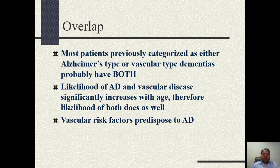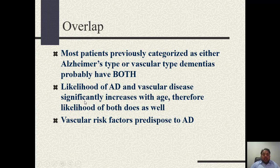Overlap syndrome is when Alzheimer's disease and vascular dementia coexist. Most cases previously labeled as either Alzheimer's disease or vascular dementia probably have both. The likelihood of both Alzheimer's disease and vascular disease increases significantly with age.